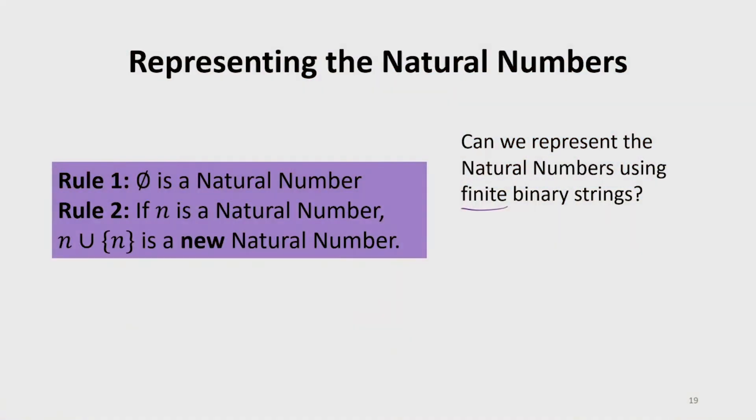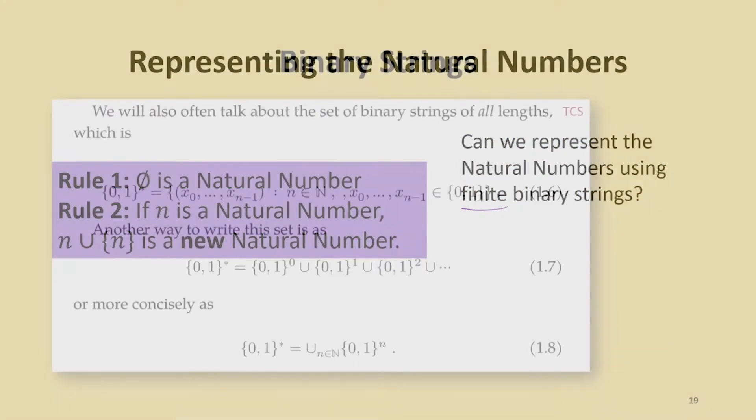Before we try to answer this, maybe we need to define the binary strings. There is a definition in the book, binary strings of all lengths. These are all the finite strings. He provides three different notations that mean the same thing, intended to define the binary strings. They're all kind of complicated. This is picking any natural number, and it's a sequence of either zeros or ones of that length.